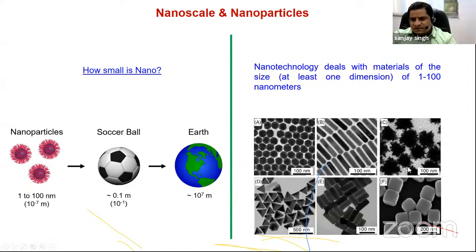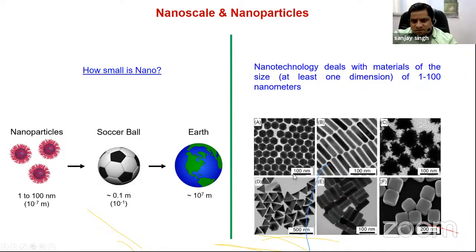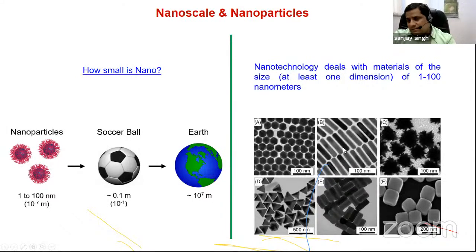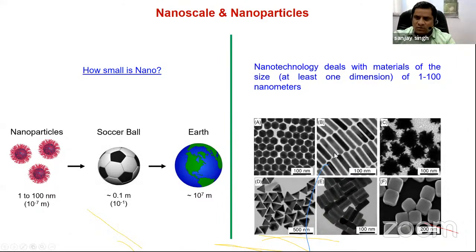Here are some typical transmission electron microscope (TEM) images of nanoparticles. Due to their extremely small size we cannot see them with naked eyes — we need TEM. The size bar shown is 100 nm. These are nanorods — they have a rod shape in nano dimensions. Some nanorods may have a length more than 100 nm, but you can still call them nanoparticles because at least one dimension (the width) is well below 100 nm.